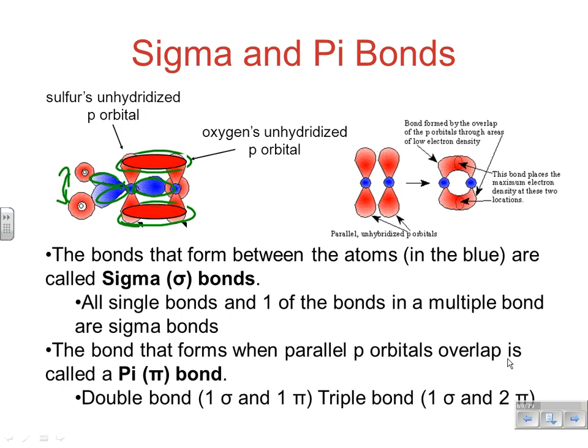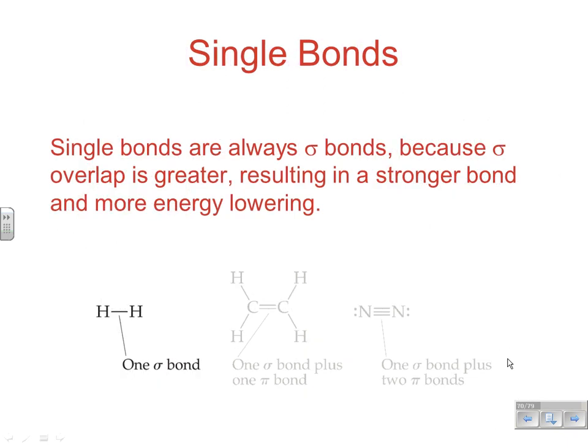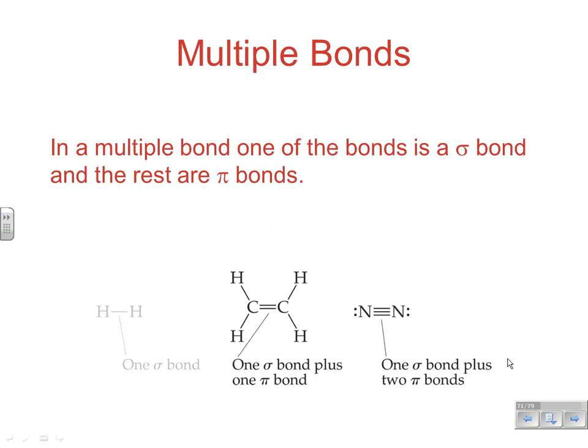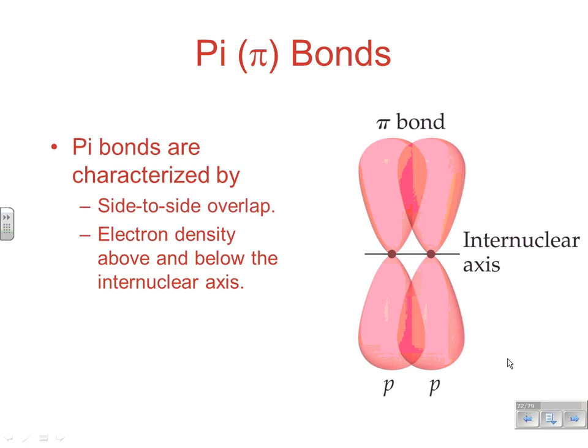In a double bond, we have one sigma bond from the normal hybrid orbital overlap, and then one pi bond. In a triple bond, you end up with two unhybridized p orbitals — one going above and below, one going front and back — giving two pi bonds. Single bonds are always sigma bonds because sigma overlap is stronger, resulting in a lower energy bond. In multiple bonding, we have one sigma plus pi bond contributions from overlapping p orbitals.